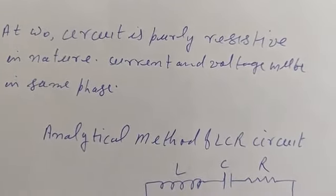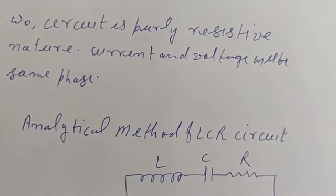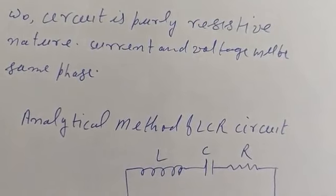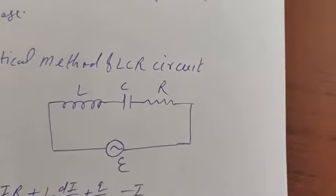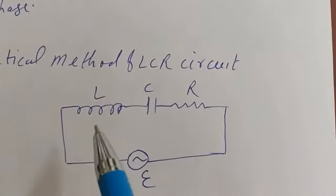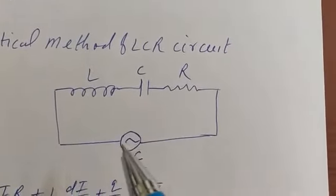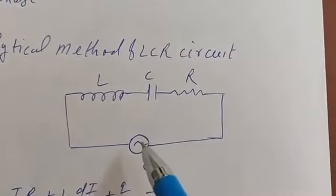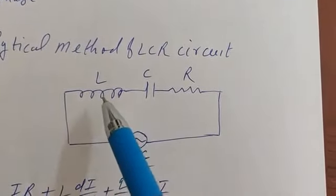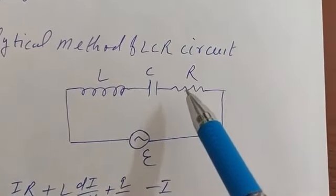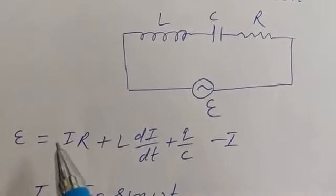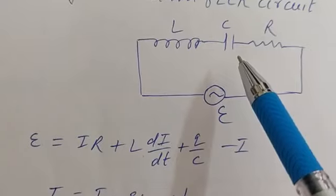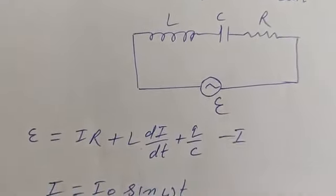Now we will use the analytical method for the LCR circuit. In the previous lecture, we calculated impedance using the phasor diagram; now we will use the analytical method. L, C, and R are connected in series — it is a series LCR circuit with an AC supply connected. According to Kirchhoff's rule, applied voltage equals the drop across the inductor plus the drop across the capacitor plus the drop across the resistor: V = IR + L·dI/dt + Q/C.